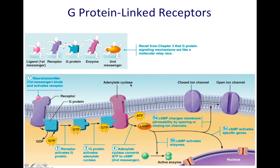Adenylate cyclase — you can see it's an enzyme, it ends in '-ase.' Its job is to transform ATP into cyclic AMP. Cyclic AMP can then do one of several different jobs. One thing it can do is change membrane permeability. This ion channel has been opened to allow a particular ion in, such as sodium, calcium, or potassium. Normally these ions are not allowed to enter or leave the cell, but if you open an ion channel, then now they are.